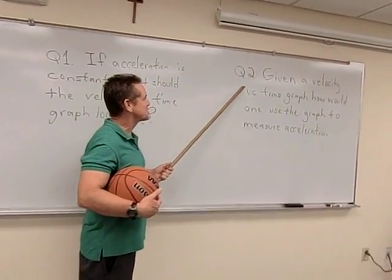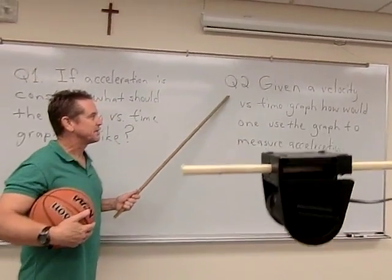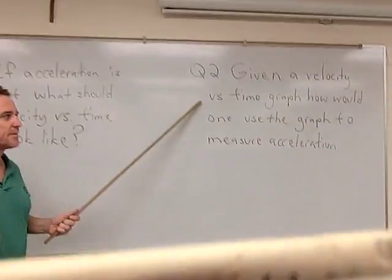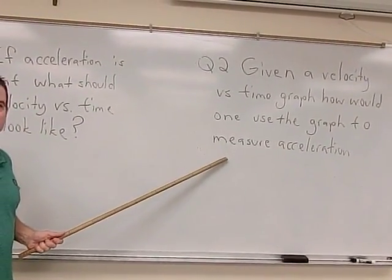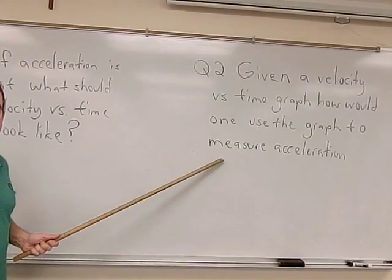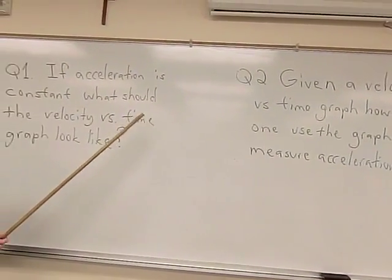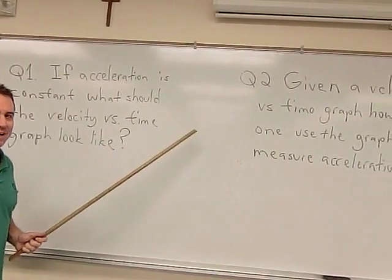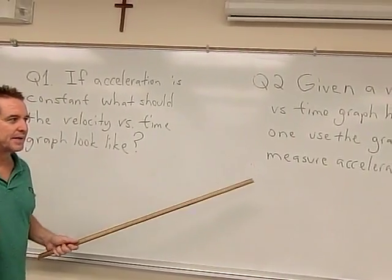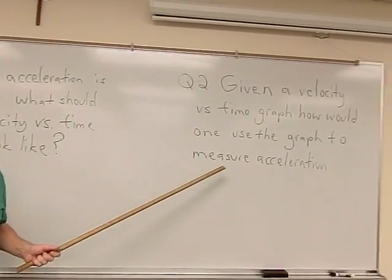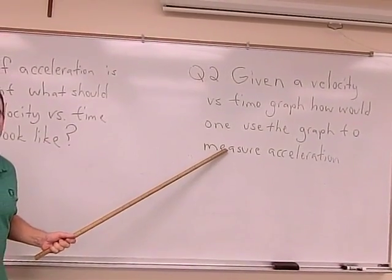Okay, question two: given a velocity versus time graph, how would one use the graph to measure acceleration? We just went over question one, so we know what the velocity graph should look like. Now, given that graph, how would we go about measuring acceleration?